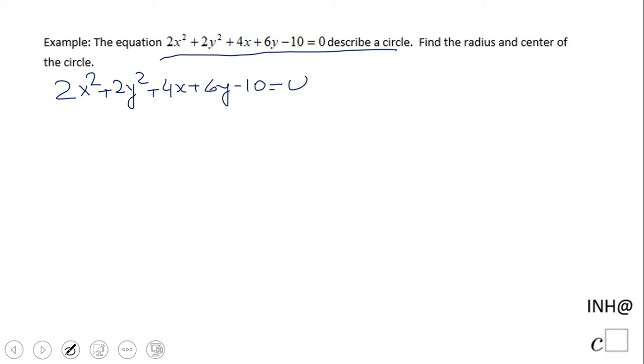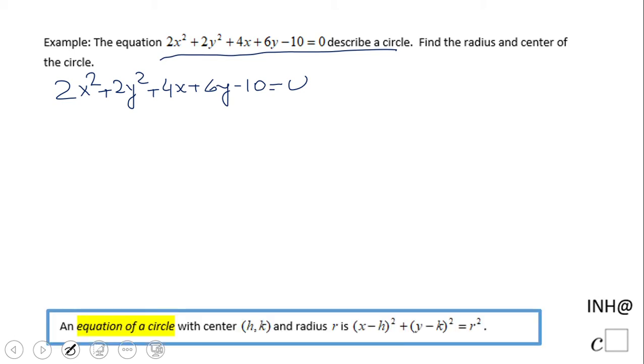Okay, so that is a form that is not going to help us find what they ask us. We need to handle that form and hopefully we're going to get something like this, and in that form h and k is the center and r is the radius.